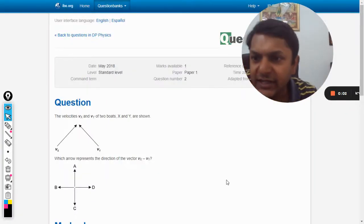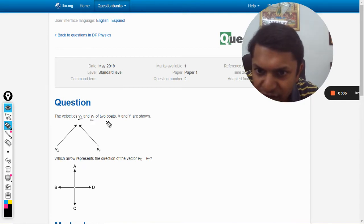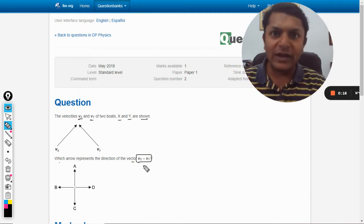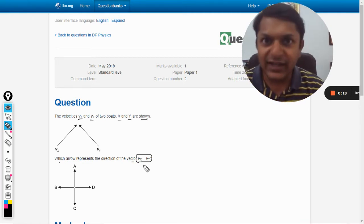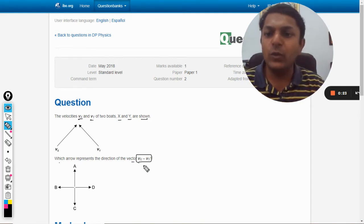Okay dear students, let us see what is there in this question. The velocities vx and vy of two boats are shown. Which arrow represents the direction of the vector vx minus vy? So there are two vectors and we are now subtracting them, so we get a new vector and we need to find in which direction the new vector will come.